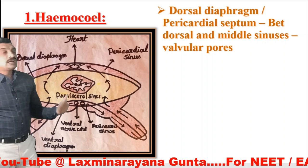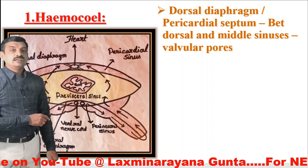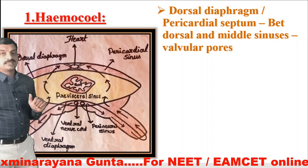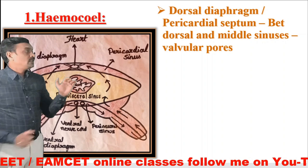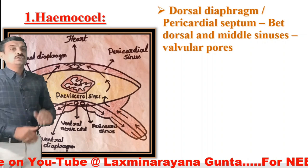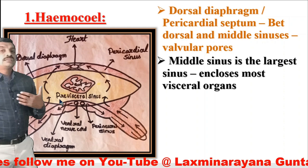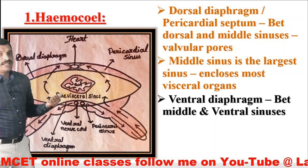The dorsal diaphragm or pericardial septum is present between the dorsal sinus and the middle sinus. This septum has a number of valvular pores which allow the passage of blood from the middle sinus to the dorsal sinus, but not from the dorsal sinus back to the visceral sinus. The middle sinus is the largest sinus and encloses almost all visceral organs including the alimentary canal and salivary glands.